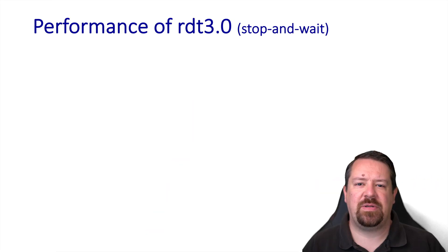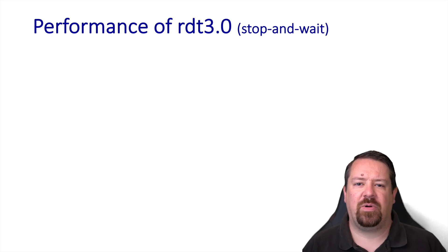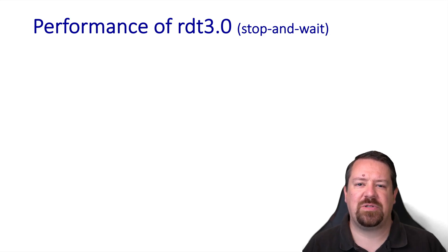Already in this course, you've seen some instances where protocol design can have a significant impact on performance. One example of this was with HTTP 1.0, where each request had to start a new TCP connection, and that was improved in HTTP 1.1, allowing subsequent requests to reuse the same TCP connection. We're going to see some similar things with the transport layer.